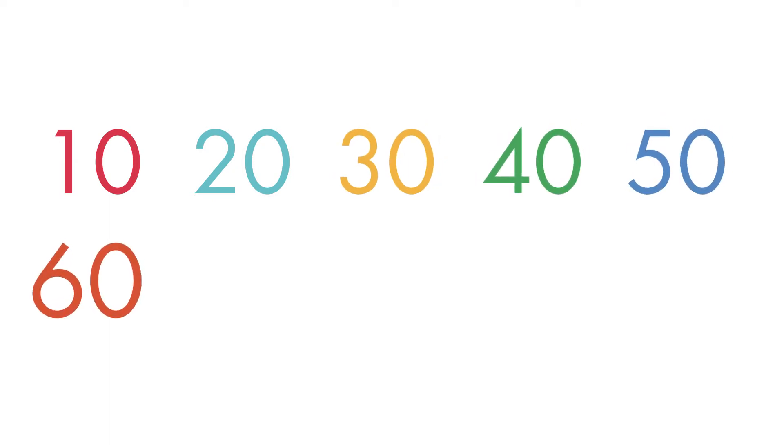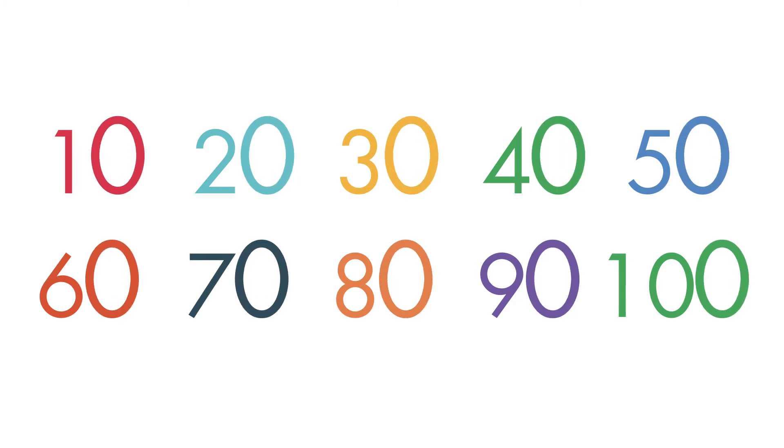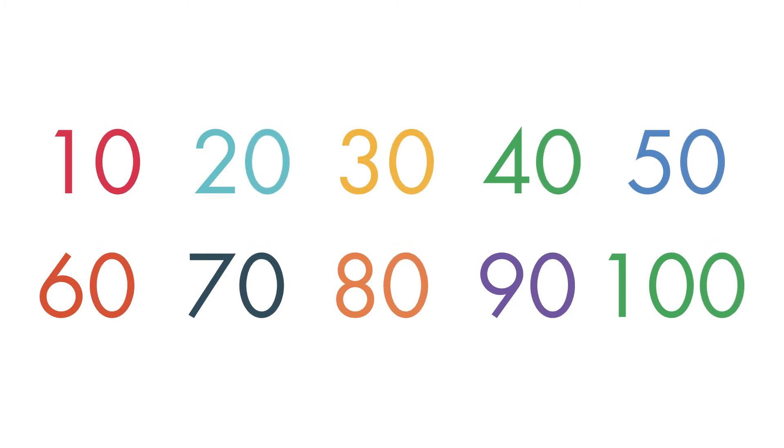10, 20, 30, 40, 50, 60, 70, 80, 90, 100. Any number that has a zero in the ones place is a multiple of 10.